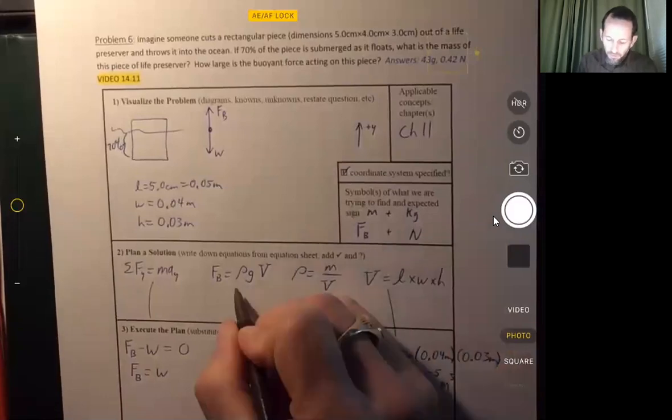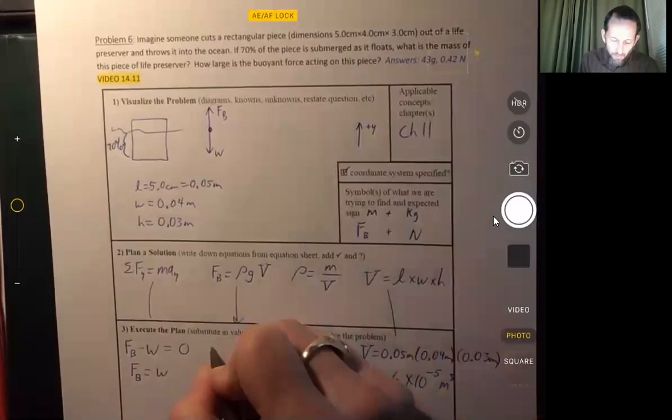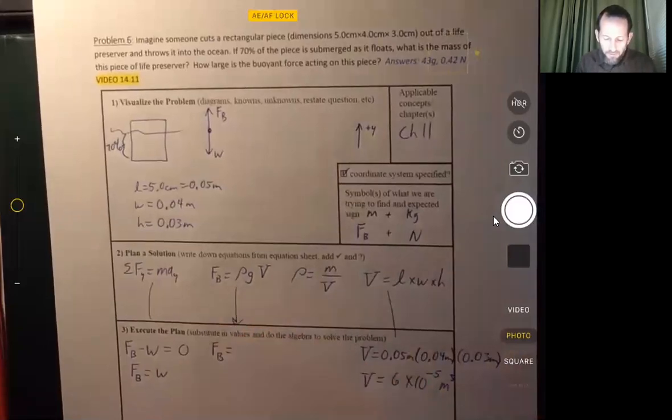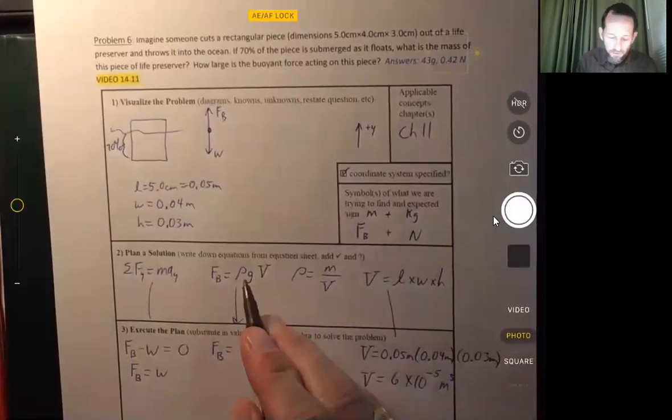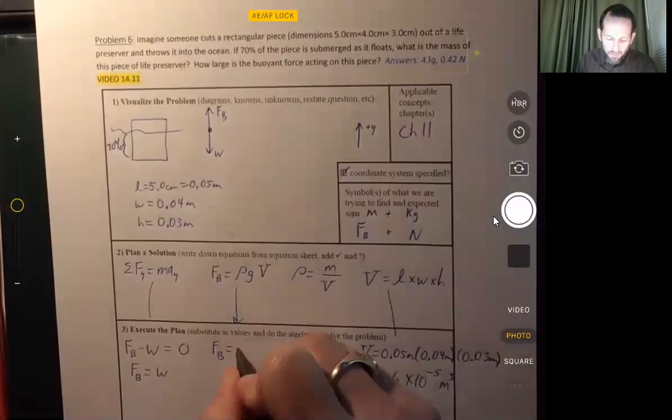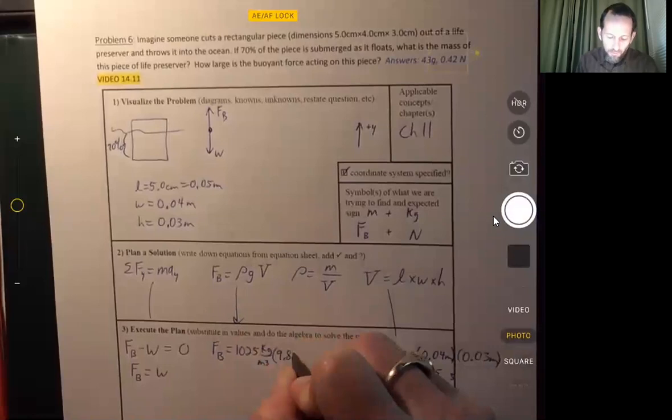Let's see, we could take this equation. So the buoyant force. Let's see, how much do we know? Well, there's the density. It's not the density of the object though, that's the density of the water. And since it's in the ocean, we're going to use the value from our equation sheet for saltwater.